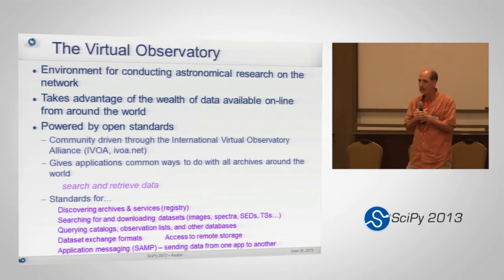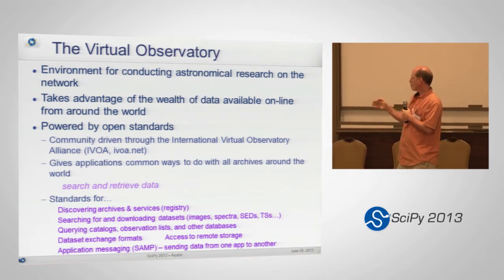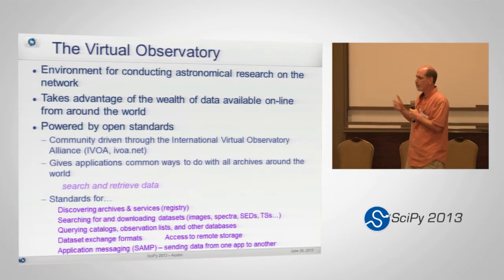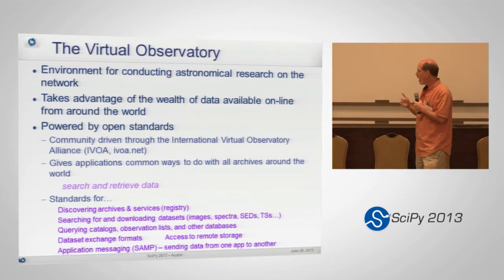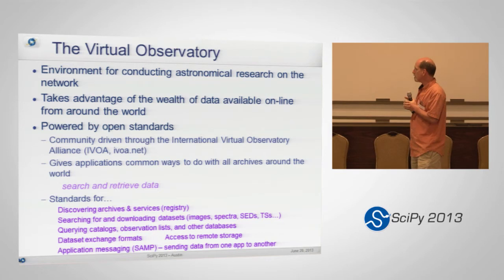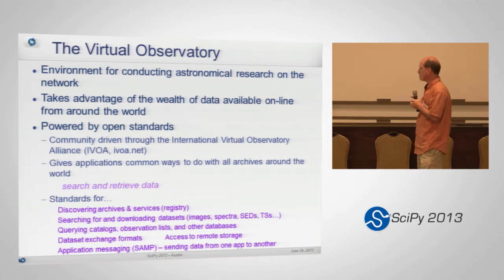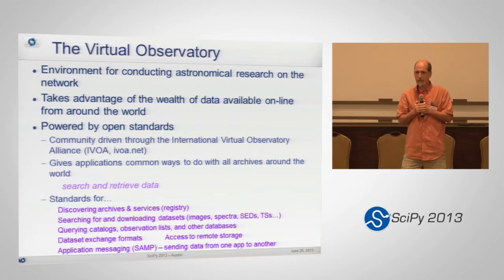That isn't to say there isn't value in custom interfaces, but certain kinds of science — especially the question of what comprehensively exists about your source — can't be done easily with heterogeneous interfaces. The VO standards enable new kinds of science and discovery. They handle discovery of archives through a registry, then allow you to search those archives, download datasets, query catalogs, and use data exchange formats like VO table. There's also SAMP — a messaging protocol for getting applications to talk to each other.